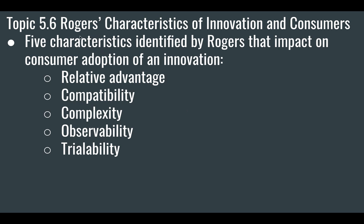This is topic 5.6, and what we're looking at today is something called Rogers' Characteristics of Innovation and Consumers. Everett Rogers, way back in 1962, wrote a book about how innovations get adopted by people. He broke it down into five characteristics that impact the adoption of a particular innovation: relative advantage, compatibility, complexity, observability, and trialability.